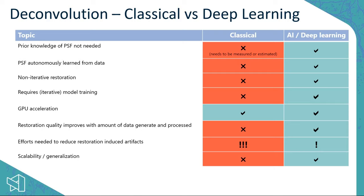With a classical approach, you never have a model — each time you start afresh and iteratively apply your algorithm to the data until you get a good result, and you have to do that every single time. Both processes are GPU accelerated and can be very fast.